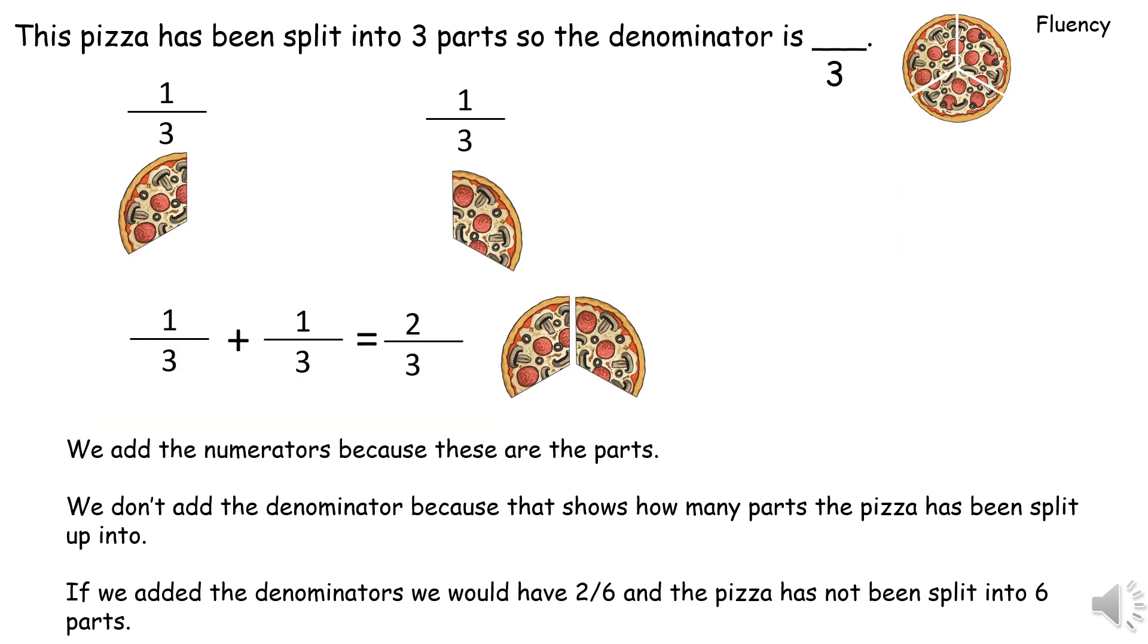This pizza has been split into three parts so the denominator must be three because a whole pizza has been divided into three. Now we are going to add two of those thirds together. One third add one third equals two thirds. We add the numerators because they are the parts, the two parts of the pizza. We don't add the denominator because that shows how many parts the pizza has been split into. If we added the denominators we would have two sixths and the pizza has not been split into six parts.